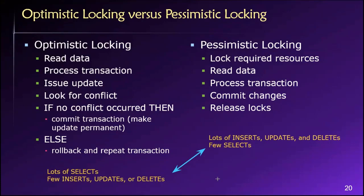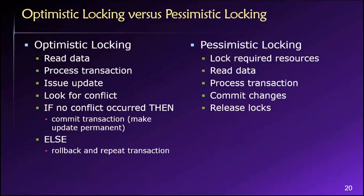If we're unsure as to which will deliver the best performance, the easiest thing to do is just run an experiment. Maybe you choose pessimistic locking first and let the database run for a week and measure the average time to service user requests. Then switch to optimistic locking and let it run for a week and measure again. Whichever is better is the one you choose.